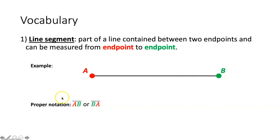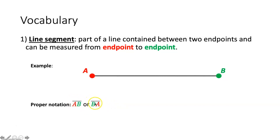The proper notation for a line segment: you pick the two endpoints, point A and point B, and write a line segment symbol above it. Remember, when we did a line it had arrows at both ends, but a line segment doesn't have any arrows — that tells you it's a line segment as opposed to a line. Remember you could also write this as segment BA as opposed to segment AB.